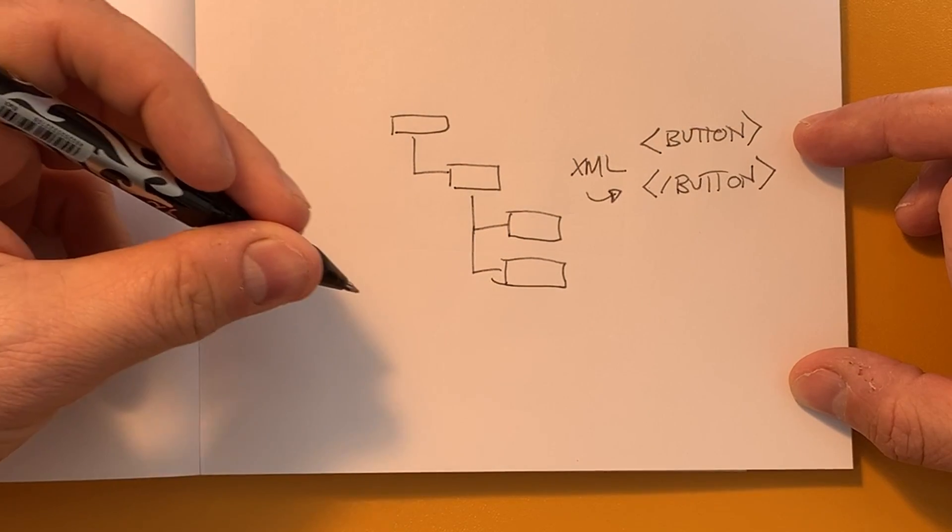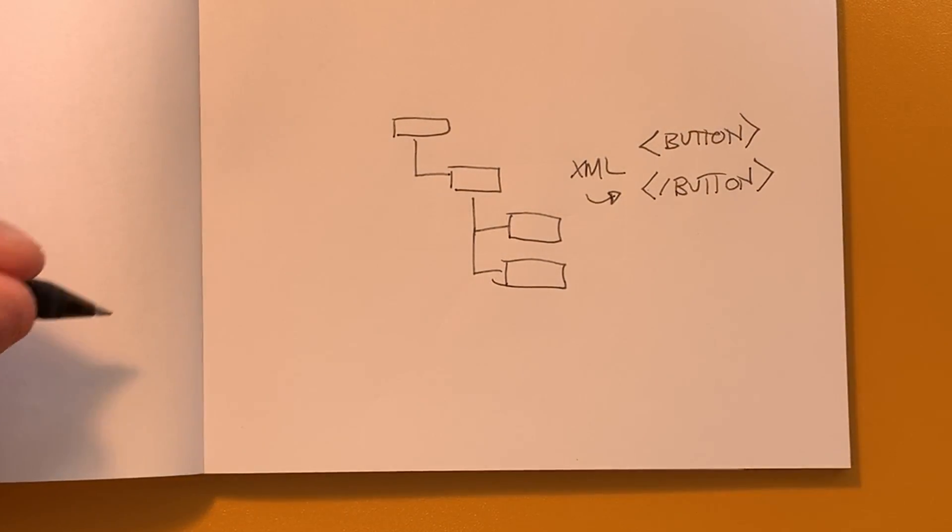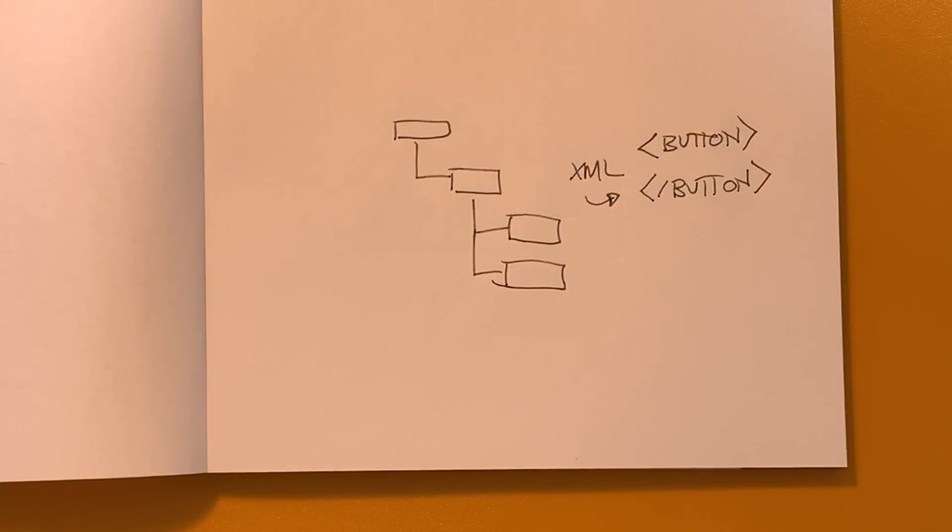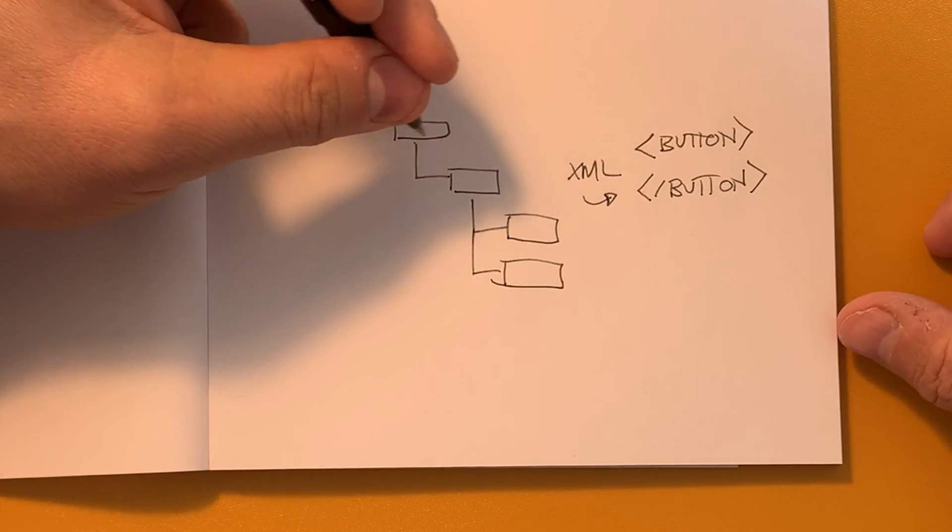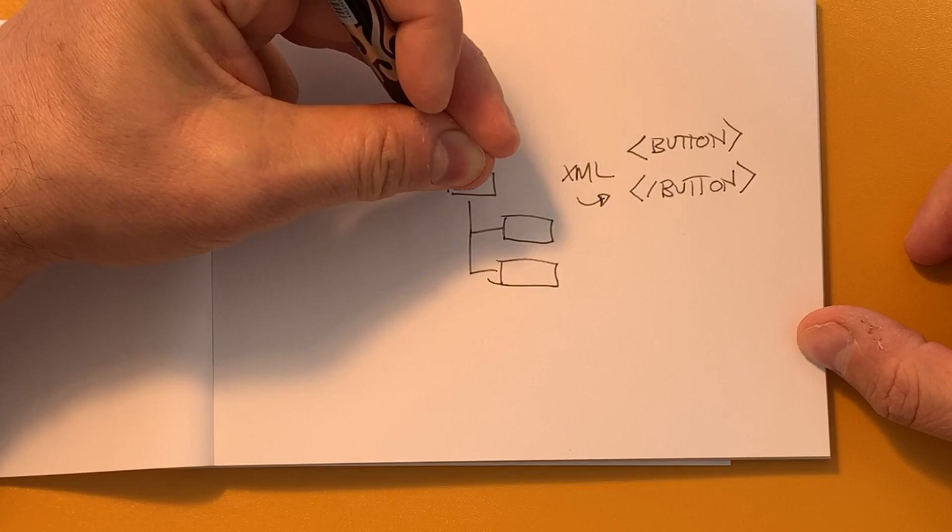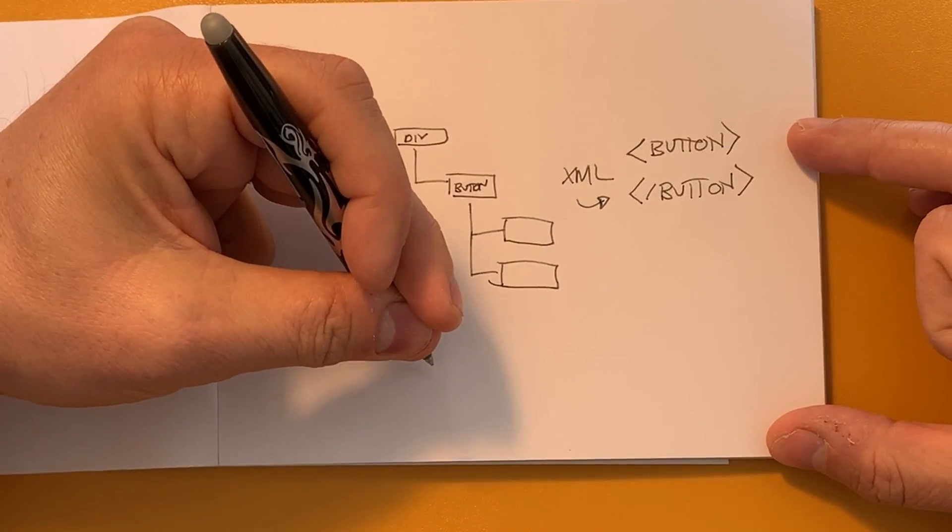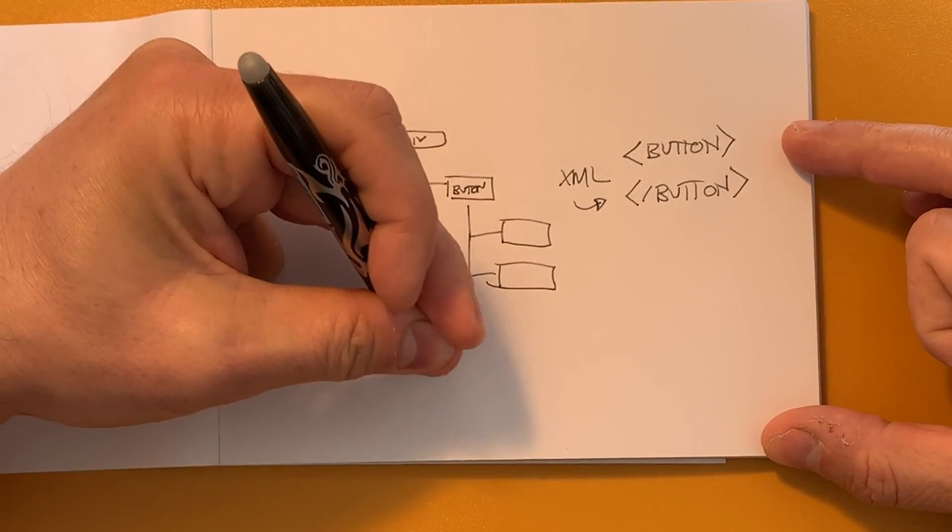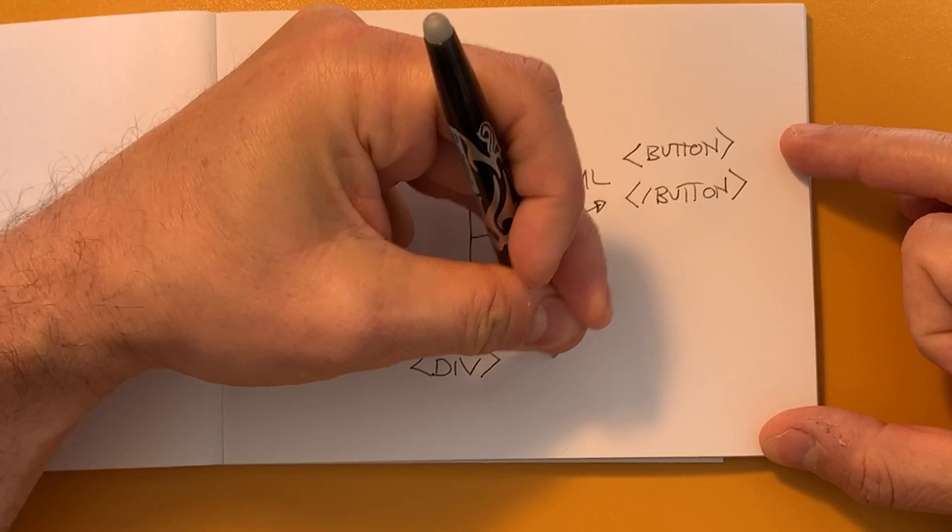So an important rule is a component must return a single React element. So if you wanted to have multiple elements, divs, buttons, all these things, you'd need to wrap them with an element like a div or even a special blank element that's provided by React.